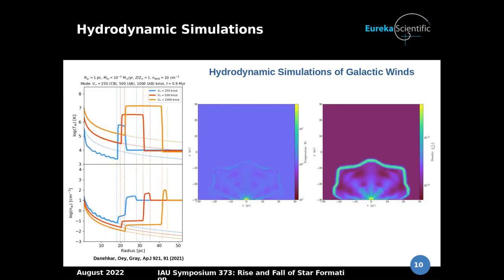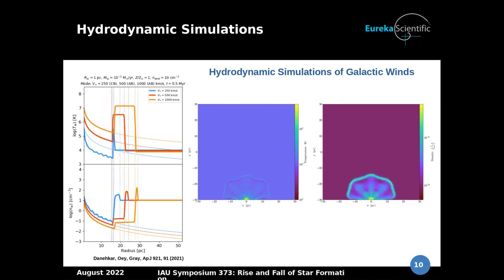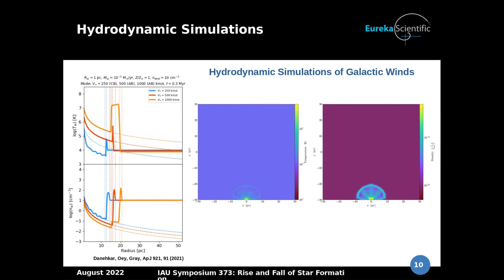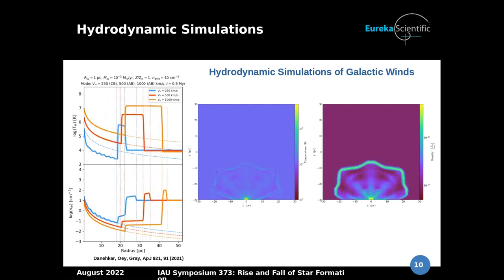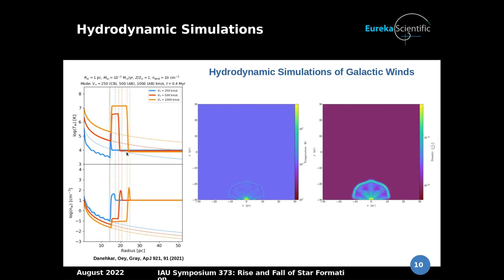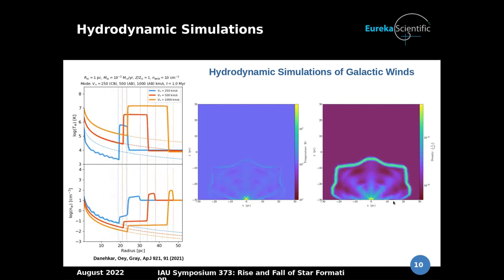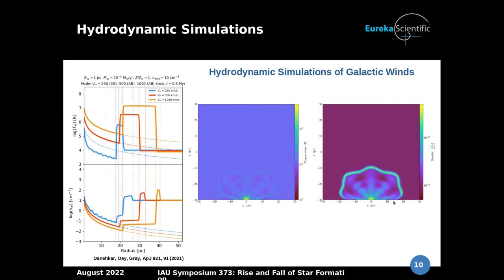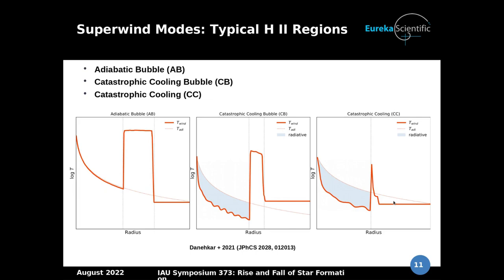Here you see the results of the hydrodynamic simulation. On the right you see the 1D profile for a wind with low velocity of 250 km/s. We see a departure from adiabatic solutions — the dashed line shows the adiabatic solution and the solid line shows what is predicted by our hydrodynamic simulations. This departure depends on the thermal wind velocity. The 2D simulations show the formation of a larger-scale super bubble in the temperature and density profile. Based on the departure of temperature from the adiabatic solution, we classify winds as adiabatic bubble, catastrophic cooling with bubble (CB), and catastrophic cooling without bubble (CC).